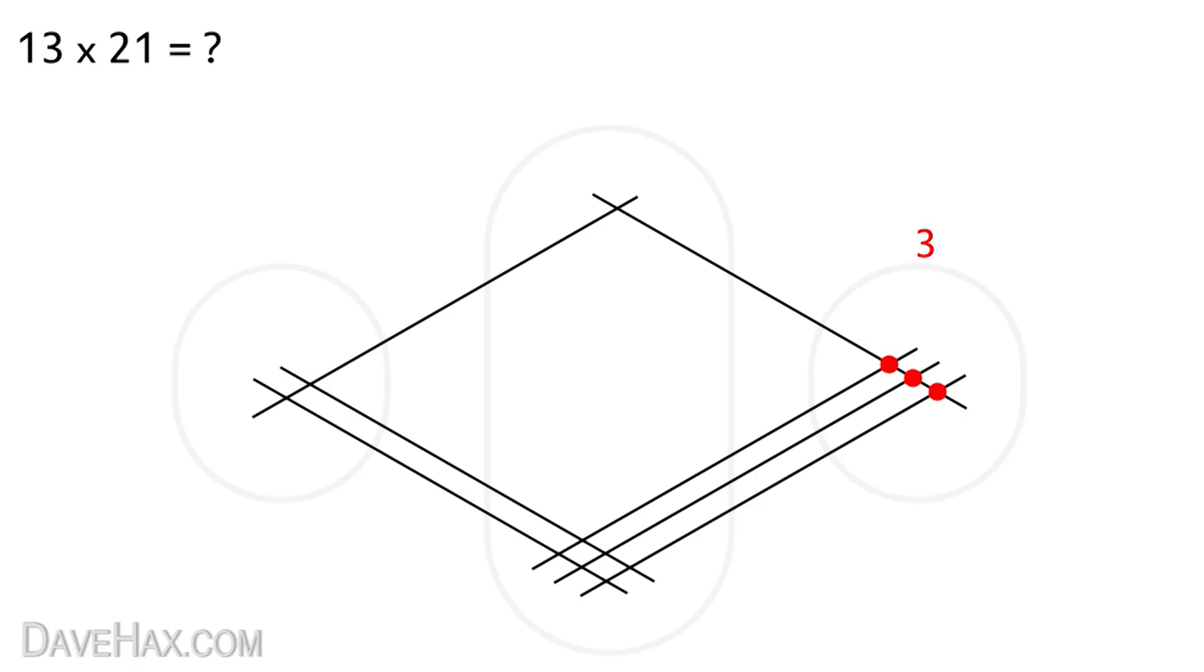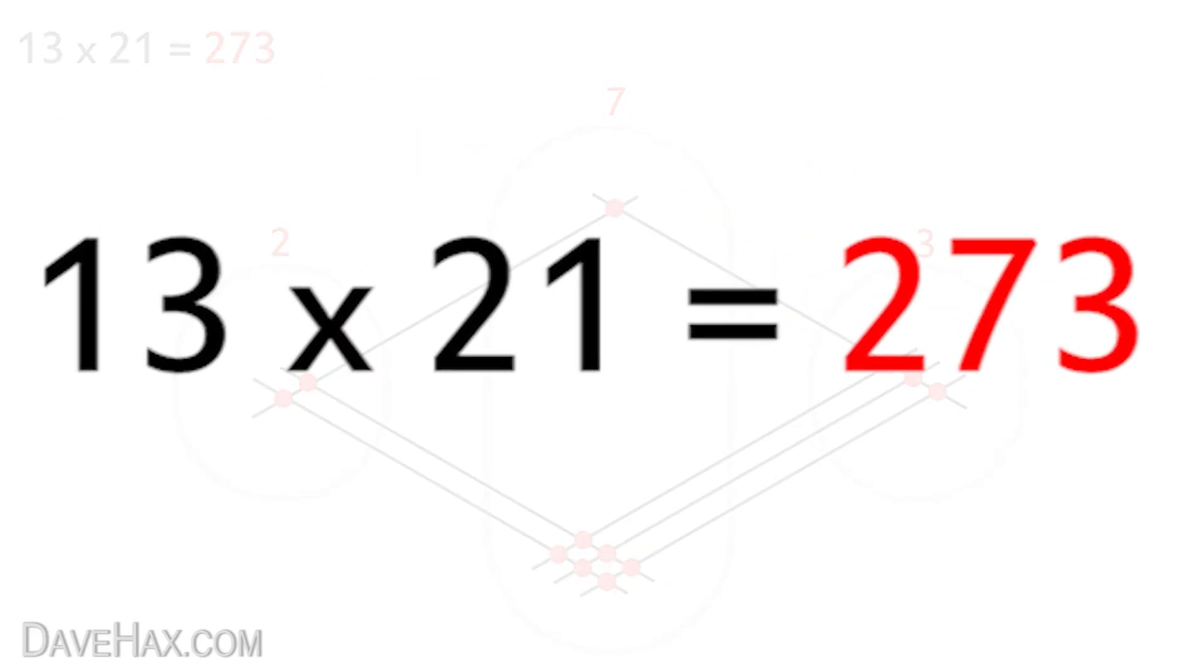So again we count how many times the lines cross 1 2 3 4 5 6 7 and write it at the top. Then move on to the last zone and do exactly the same again 1 2 3 and that gives us our answer. 13 times 21 is 273. Pretty cool huh?